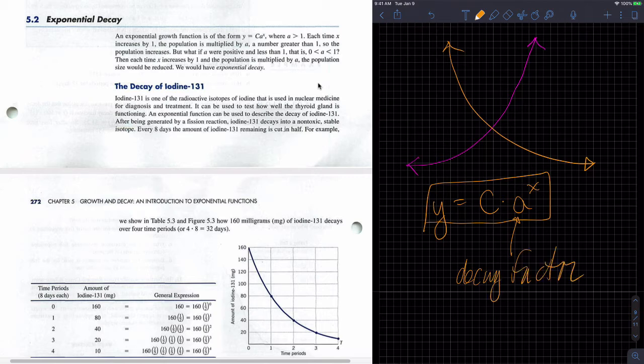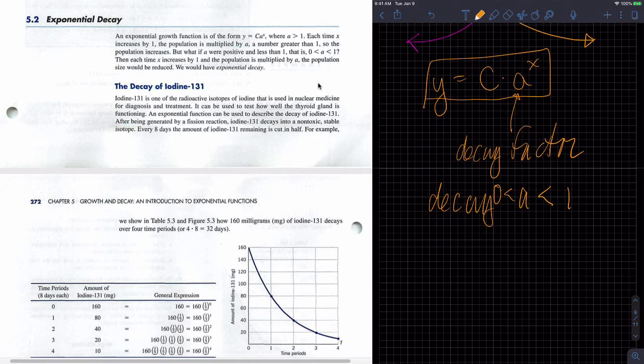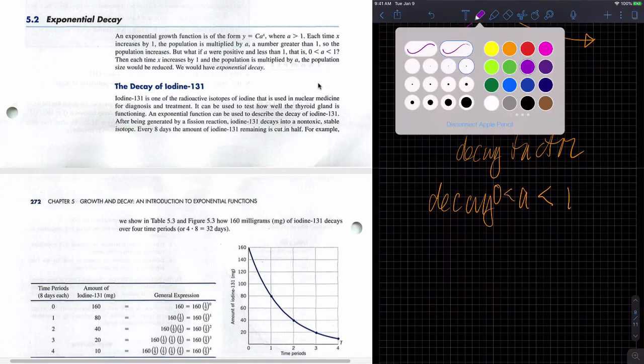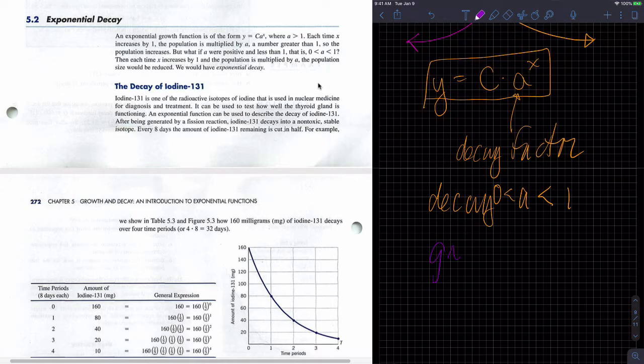How do I determine if it's exponential growth or exponential decay? Well, decay is when a is less than 1 and greater than 0. For exponential growth, it's when a is greater than 1.